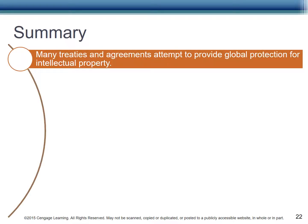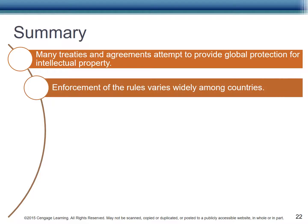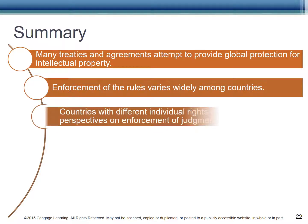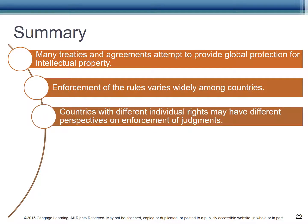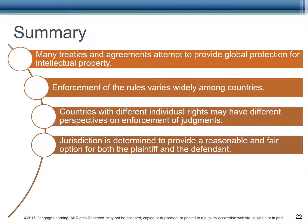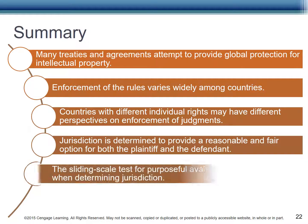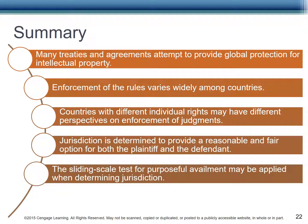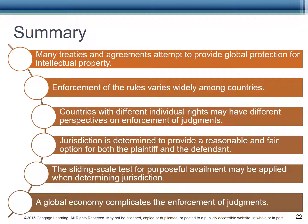To summarize: many treaties and agreements attempt to provide global protection for intellectual property, but enforcement of the rules varies widely among countries and even within states. Countries with different individual rights may have different perspectives on enforcement of judgments. Jurisdiction is determined to provide a reasonable and fair option for both the plaintiff and the defendant. The sliding scale test for purposeful availment may be applied when determining jurisdiction, and a global economy complicates the enforcement of judgments, making it much more complex.